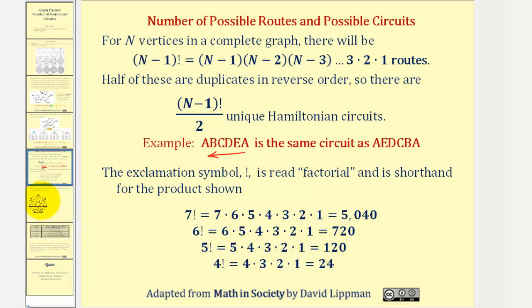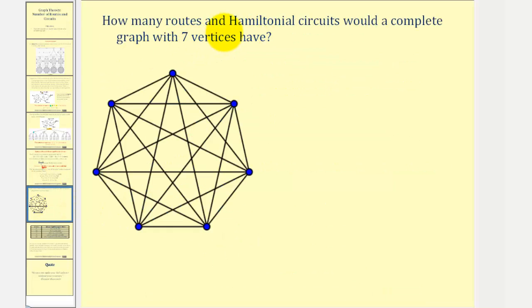Let's take a look at an example. How many routes and Hamiltonian circuits would a complete graph with seven vertices have? Notice how the complete graph is provided for us. Notice how as the number of vertices increases, to count them one at a time would be very time-consuming. So the number of routes would be n minus one factorial, or in this case, n is equal to seven.